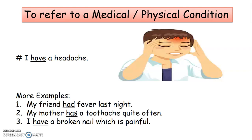Let's see more examples. First, 'My friend had a fever last night.' To indicate the physical and medical condition of the friend, we make use of the verb 'had'. Second, 'My mother has a toothache quite often.' To indicate the condition of the mother, we make use of 'has'. Third, 'I have a broken nail which is painful.' To indicate the physical condition of the person, we make use of 'have'. Hope the concept is clear to you. Thank you.